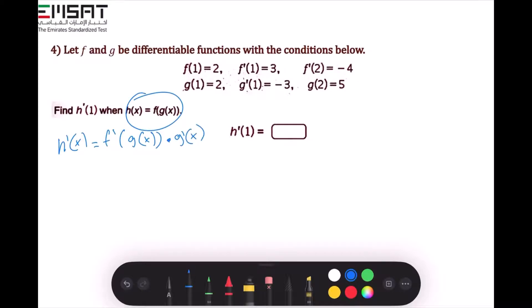So as it's required here, we have the x is 1. So we replace the x's with 1. So it's going to be h'(1) equals f'(g(1)) times g'(1).